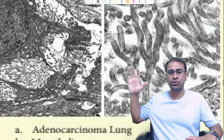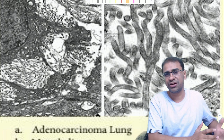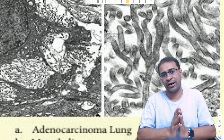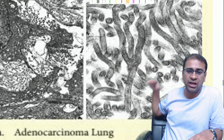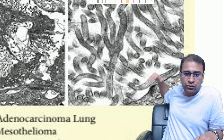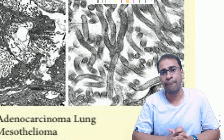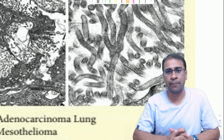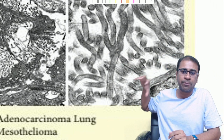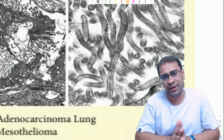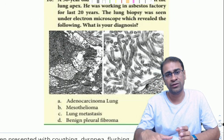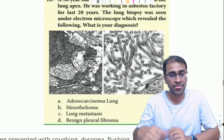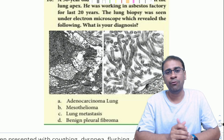Moving on to mesothelioma: it is important to differentiate mesothelioma from adenocarcinoma using electron microscopy. If you see long branching microvilli without attachment to the base, it is malignant mesothelioma. If you see short plump microvilli attached to the base, it is adenocarcinoma of the lungs.